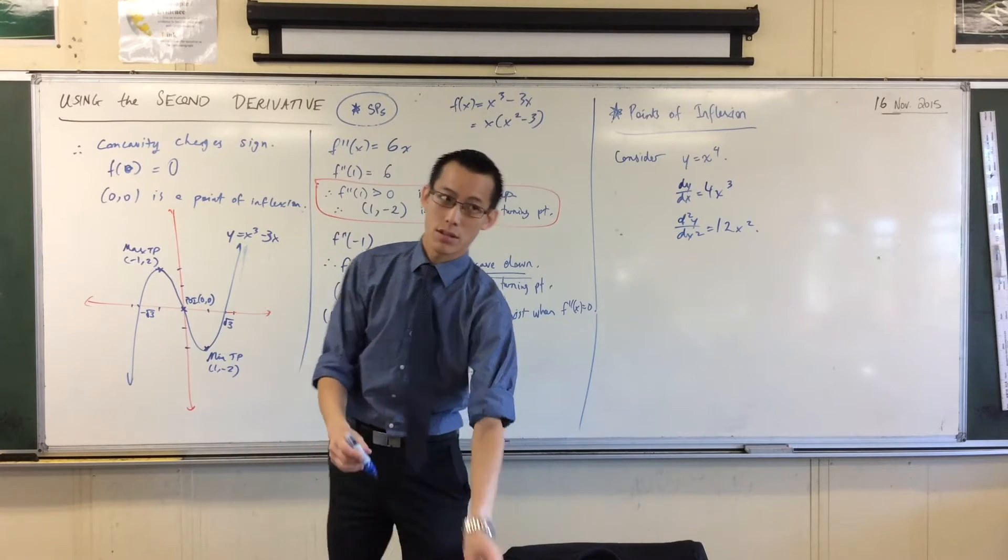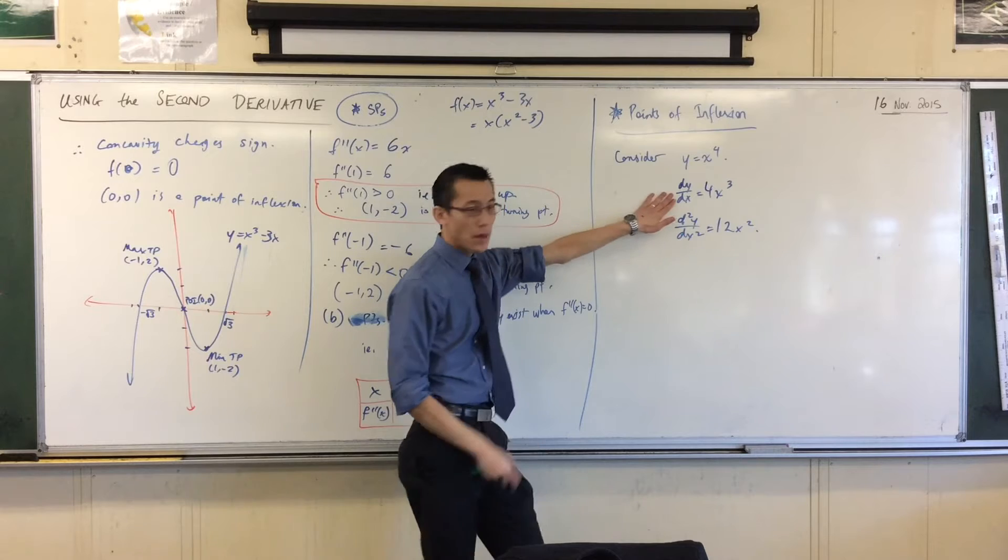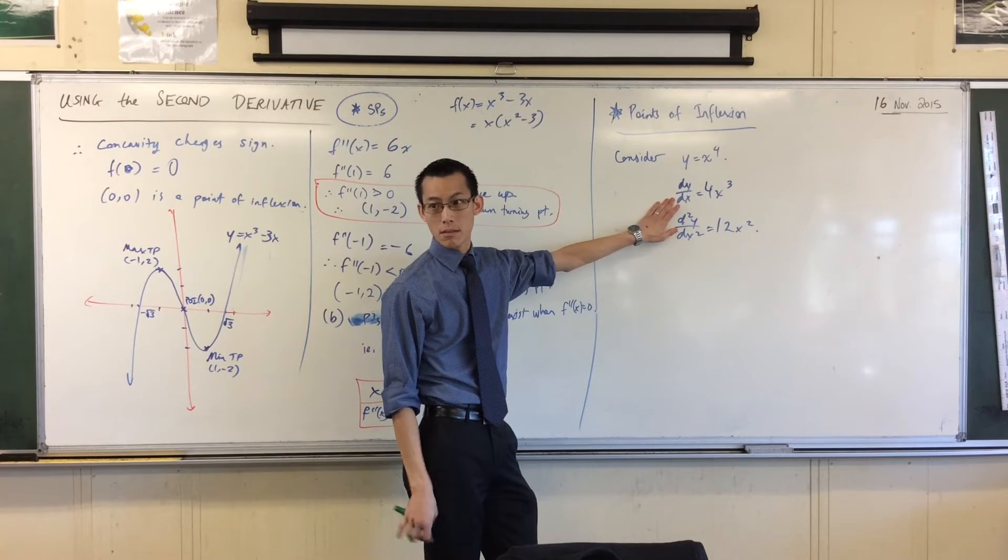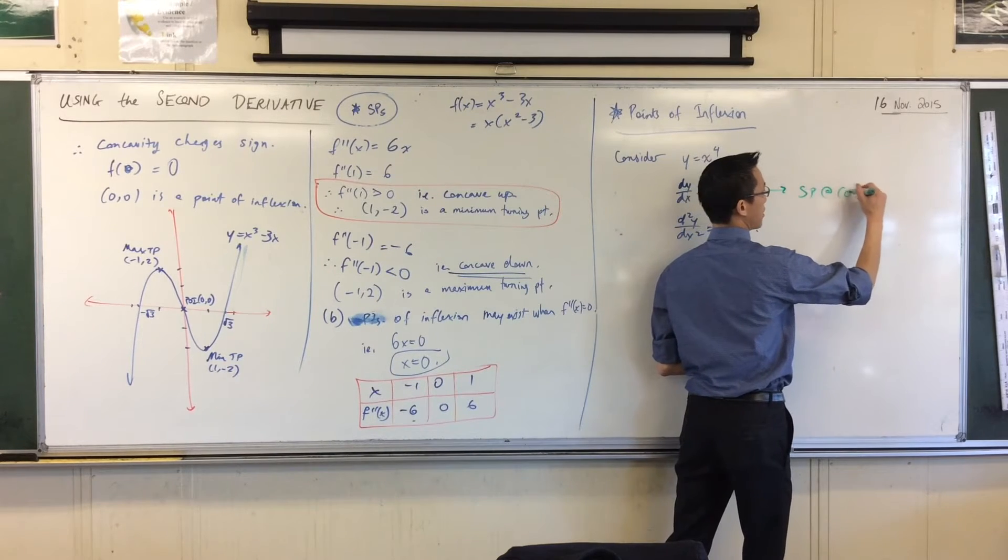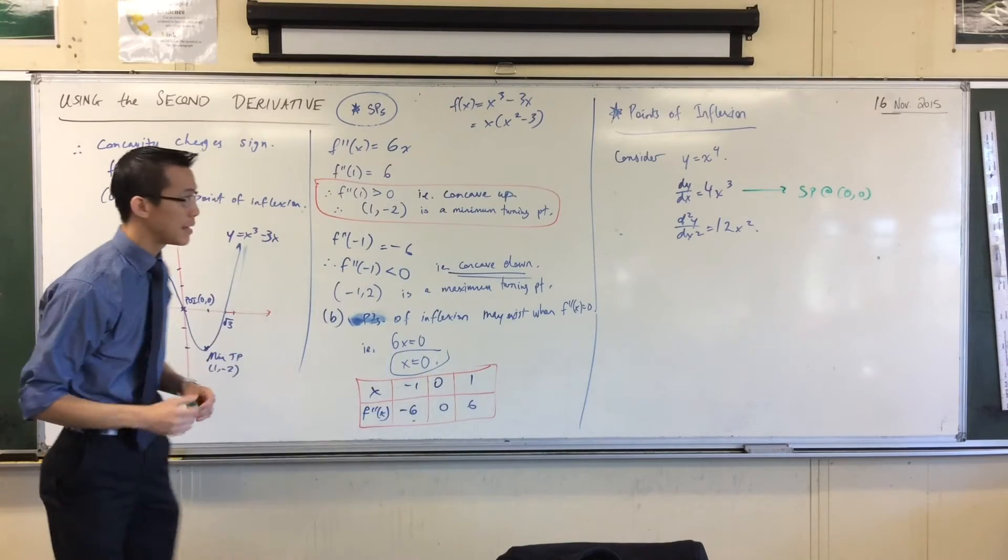Now immediately, and I'm not going to do this formally, we can just do this on the side and you can see. Immediately you can see, where are you going to get stationary points? At the origin. So this implies there's a stationary point at (0,0). And that's the only solution to the first derivative being 0.